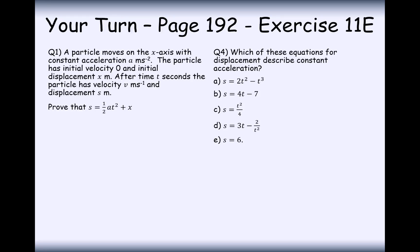Right then. Let's have a look at these questions here then. So a particle moves on the X axis with constant acceleration A. The particle has initial velocity 0 and initial displacement X. After time T seconds, the particle has velocity V and displacement S meters. Prove that S equals half A T squared plus X.